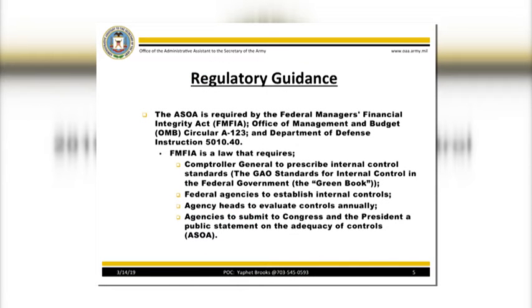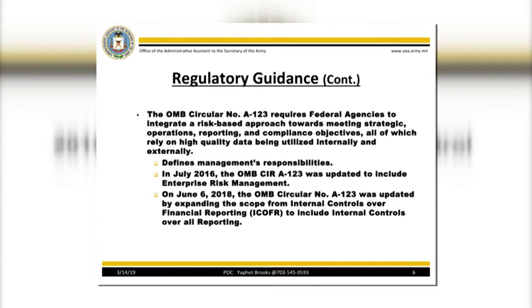The ASOA is required by the Federal Manager's Financial Integrity Act, OMB Circular A-123, and DODI 501040. This guidance requires Federal agencies to establish internal controls, to evaluate controls annually, and to submit to Congress and the President a Public Statement on the Adequacy of Controls. A-123 requires Federal agencies to integrate a risk-based approach toward meeting strategic, operations, reporting, and compliance objectives. In 2016, the Circular was updated to include enterprise risk management. In 2018, it expanded the scope from internal controls over financial reporting to include internal controls over all reporting.